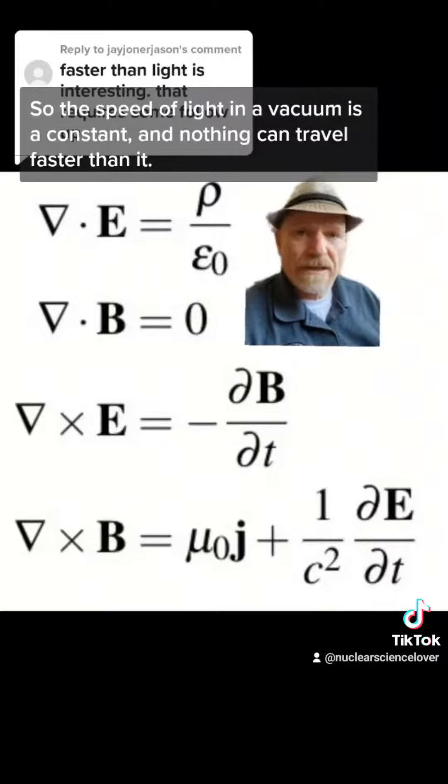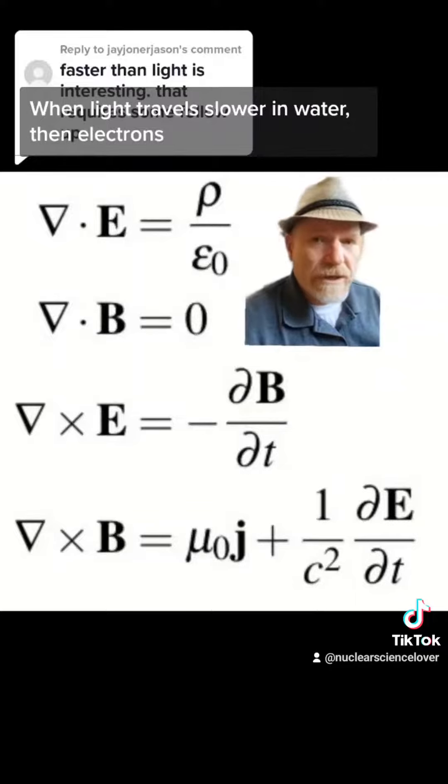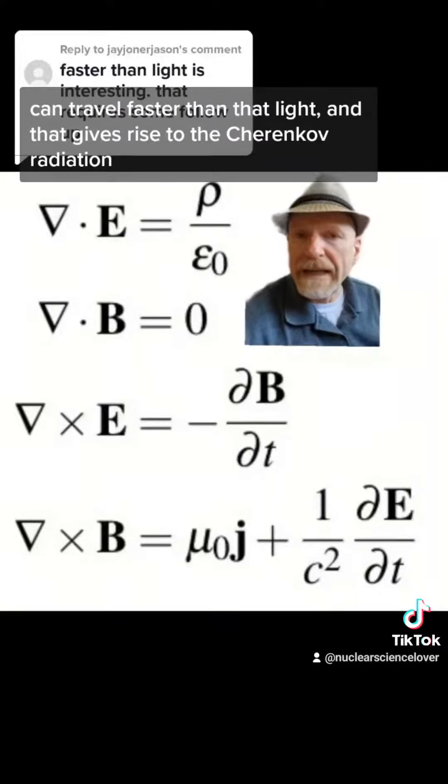The speed of light in a vacuum is a constant and nothing can travel faster than it. But when light travels slower in water, then electrons can travel faster than that light.